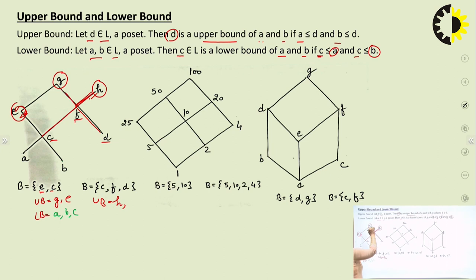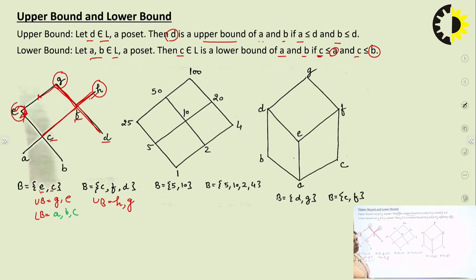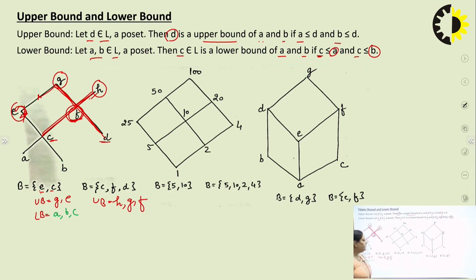Now checking G: F is related to G — yes. C is related to G — yes. D is related to G — yes. So G is also in the upper bound. For E: F is not related to E because we would have to move downward. So E is not in the upper bound. Due to reflexivity, C is related to F and D is related to F, and F is related to itself, so F is also in the upper bound of {C, F, D}.